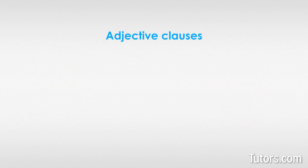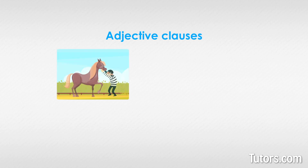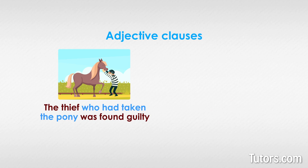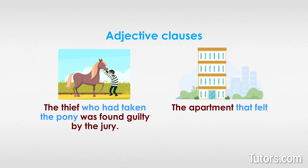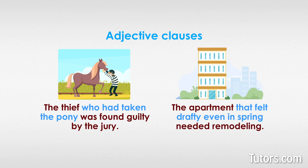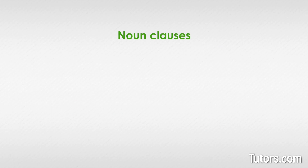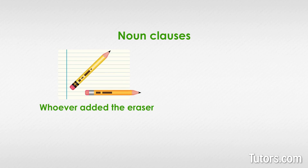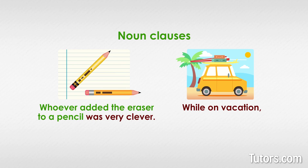Examples of adjective clauses working as dependent clauses in complex sentences might be: 'The thief who had taken the pony was found guilty by the jury.' 'The apartment, that felt drafty even in spring, needed remodeling.' Examples of noun clauses working as dependent clauses might be: 'Whoever added the eraser to a pencil was very clever.' 'While on vacation, we can do whatever we like.'